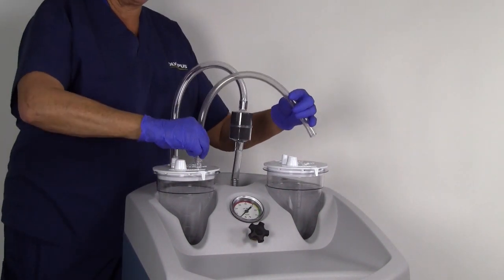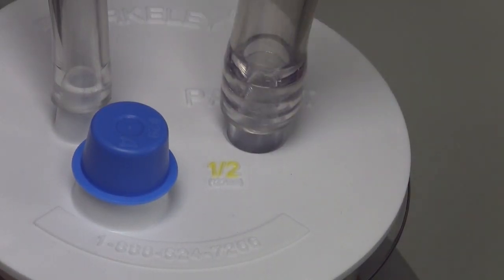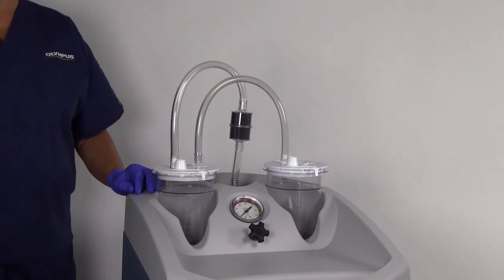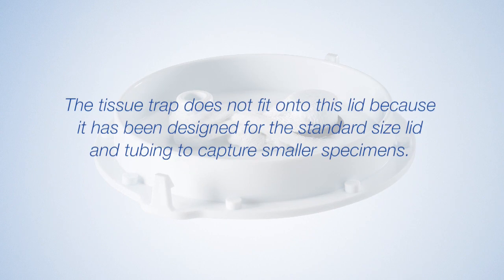First, for the primary canister, you need to use a lid that has the larger, or 1.5 inch opening, that can accommodate the larger diameter tubing set. This lid comes pre-attached with a gauze sack for tissue capture. The tissue trap does not fit onto this lid because it has been designed for the standard sized lid and tubing to capture smaller specimens.